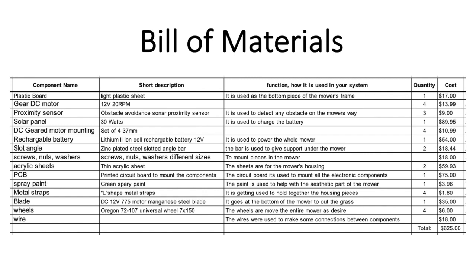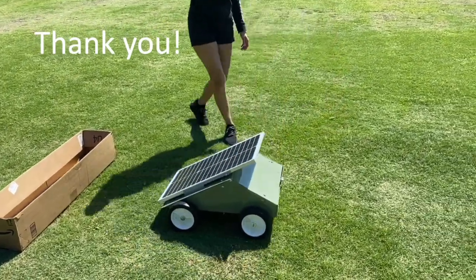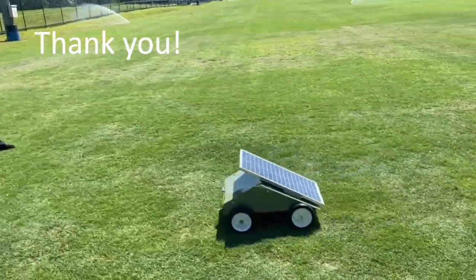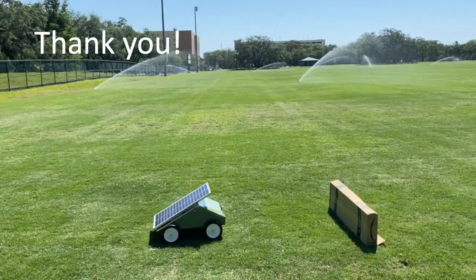The total budget exceeded the estimated value due to some components failing in testing. For instance, the stepper motors initially chosen for their high torque eventually limited movement due to their high holding torque, so we switched to four geared DC motors. All materials were split evenly among ourselves as we had no sponsor. Work was evenly distributed using documents provided by the professors to plan meetings around given deadlines. Thank you for listening — we appreciate your time, and here's a short video of the mower going through its sequence.